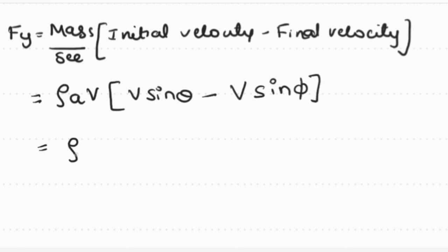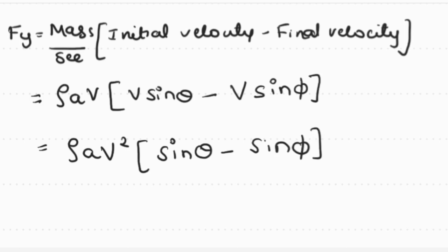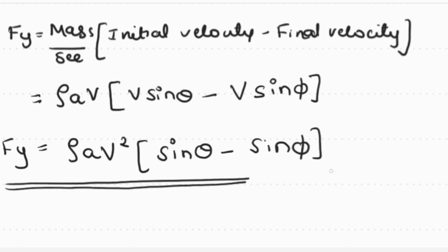Taking common factors: Fy equals rho times A times V squared times (sin theta minus sin phi). This is the equation for the force exerted by the jet in the direction perpendicular to the jet when the plate is unsymmetrical. We will deal with the next condition in the next session. Thank you.